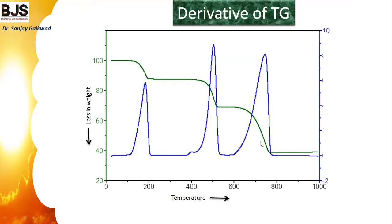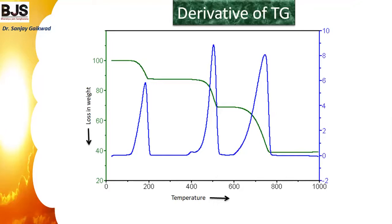From the derivative curve, one can easily understand at what temperature each molecule is removed. For calcium oxalate: at what temperature water is removed, at what temperature carbon monoxide and carbon dioxide gases are removed — all this can be studied with the help of derivative thermogravimetric analysis.